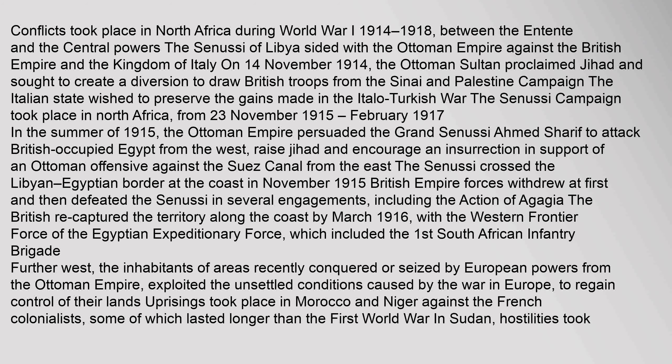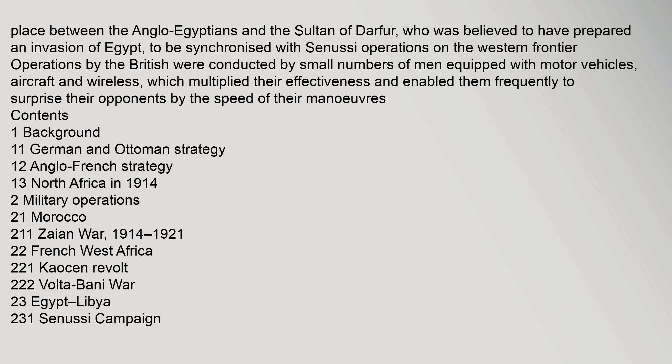In the summer of 1915, the Ottoman Empire persuaded the Grand Senussi Ahmed Sharif to attack British-occupied Egypt from the west, raise jihad, and encourage an insurrection in support of an Ottoman offensive against the Suez Canal from the east. The Senussi crossed the Libyan-Egyptian border at the coast in November 1915. British Empire forces withdrew at first and then defeated the Senussi in several engagements, including the action of Agagia. The British recaptured the territory along the coast by March 1916, with the Western Frontier Force, which included the 1st South African Infantry Brigade. Operations were conducted by small numbers of men equipped with motor vehicles, aircraft, and wireless, which multiplied their effectiveness.